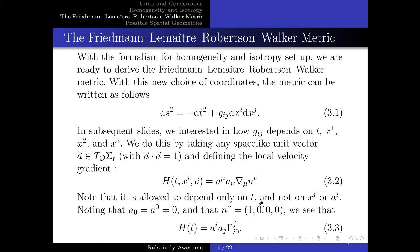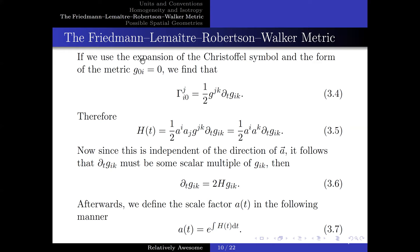We see that the local velocity gradient can be written in terms of the Christoffel symbol. If we use the expansion of the Christoffel symbol and the form of the metric g_0i, we find that this Christoffel symbol is as follows. Therefore, the local velocity gradient can be written in terms of the time derivative of the metric. Now, since this is independent of the direction of a, it follows that the time derivative of the metric is some multiplicative constant of the metric. Then it can be mathematically written in the following manner.